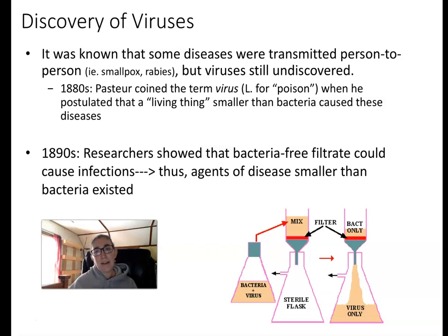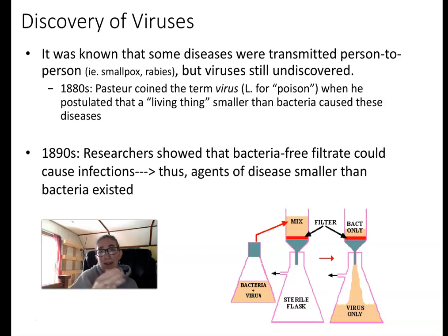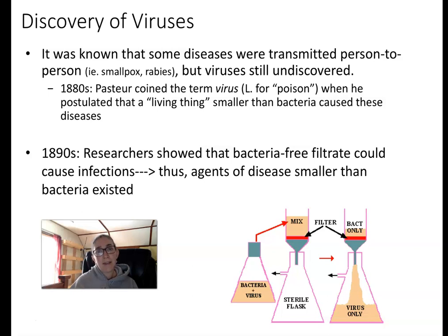Bacteria were discovered in the late 1800s, and we started to attribute diseases to these infectious microscopic organisms. Louis Pasteur and Robert Koch came up with a scientific method for establishing cause and effect between a microorganism and disease. Scientists and doctors started to recognize the infectious nature of some diseases, but sometimes they couldn't identify a bacterium as the cause, so they hypothesized that there might be an infectious material even smaller than bacteria.